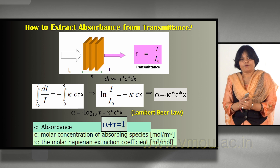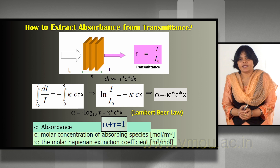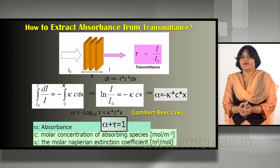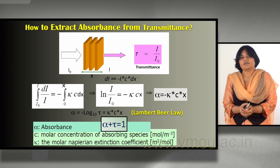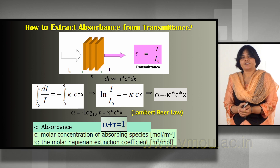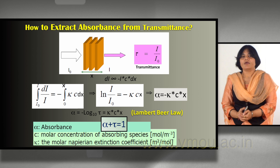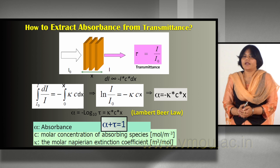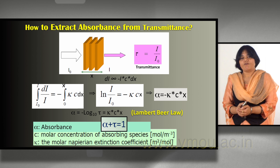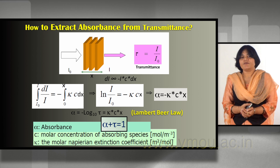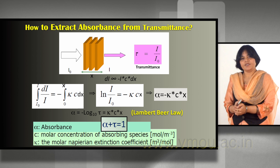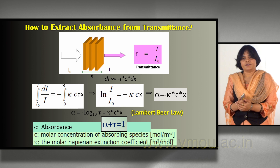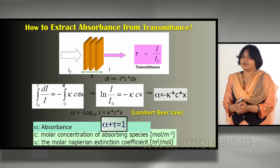Combining the two variables — concentration and path length — the law is expressed as Beer-Lambert's Law: absorbance equals the molar Naperian extinction coefficient multiplied by concentration multiplied by path length. Another form of Beer-Lambert's Law expresses absorbance as minus log₁₀ of transmittance T, and the sum of absorbance and transmittance is equal to 1.